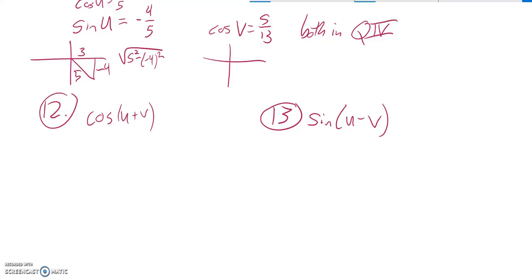Looking at angle v, also terminates in the fourth quadrant. Cosine is 5 thirteenths. So this must be a 5, and this must be a 13. I'm going to figure out that distance there using the Pythagorean theorem again.